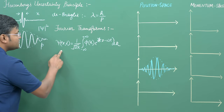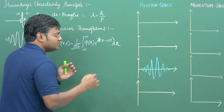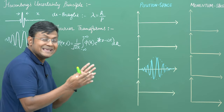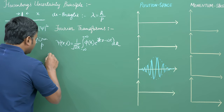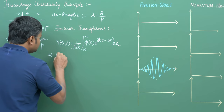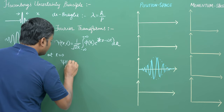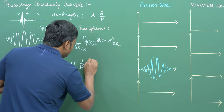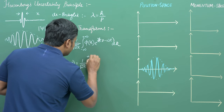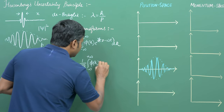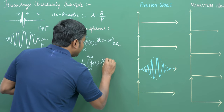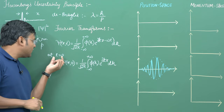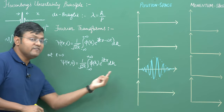This wave packet is not just a function of x; it is also a function of time. We are interested in looking at the wave packet at a given instant in time. At time t = 0, the wave packet function is psi(x, 0) = 1 over root(2π) times the integral from minus infinity to plus infinity of phi(k) e^(ikx) dk. The time component has been removed because for t = 0, this is essentially the wave packet.